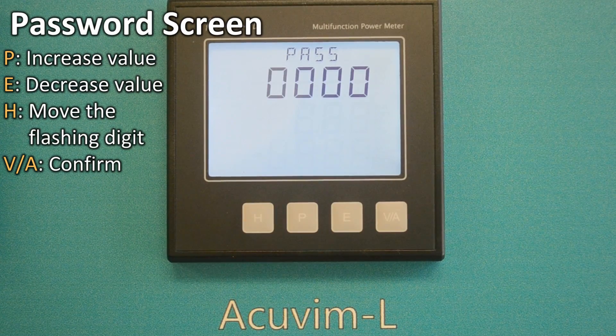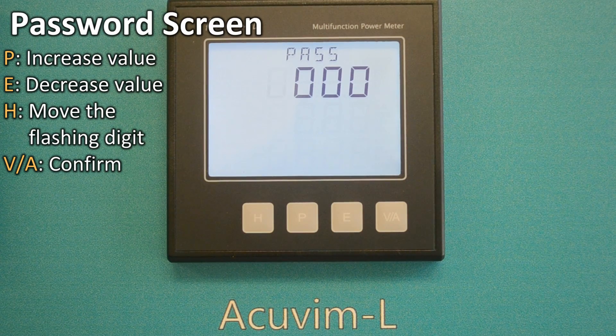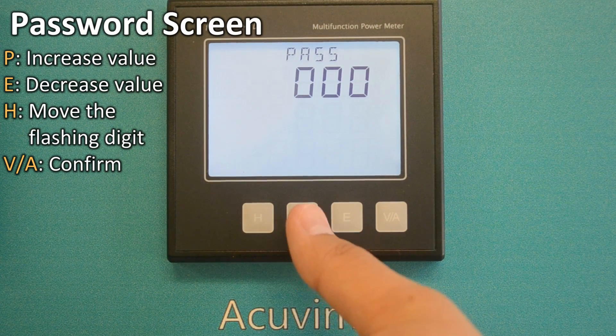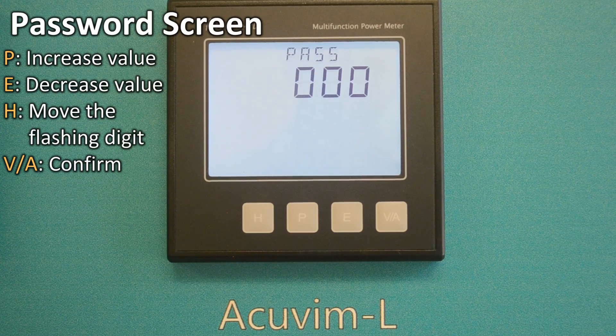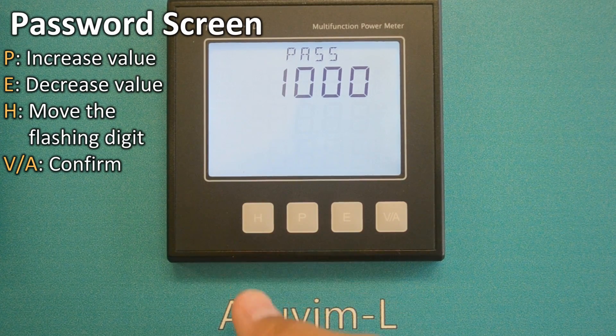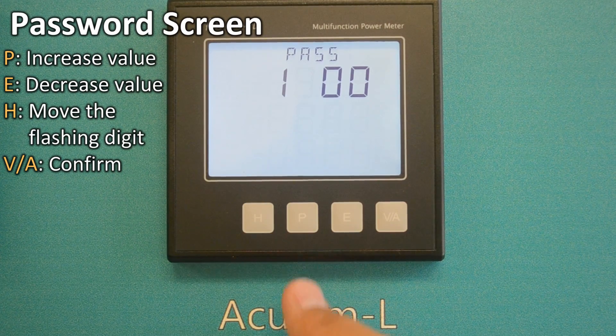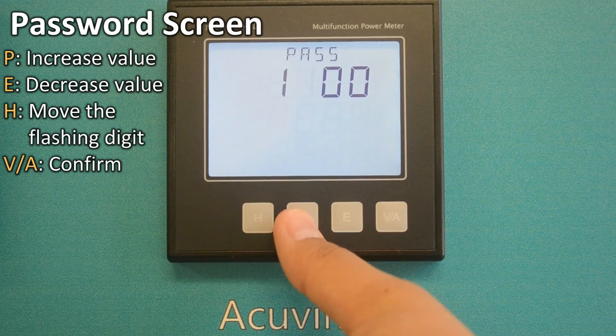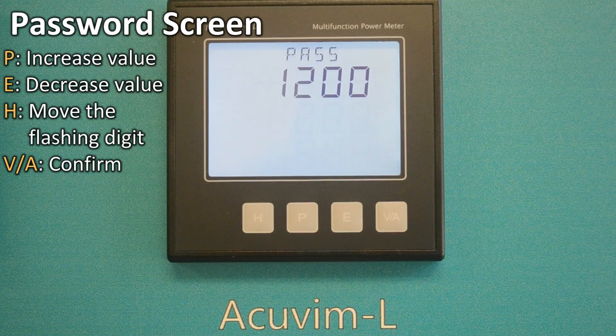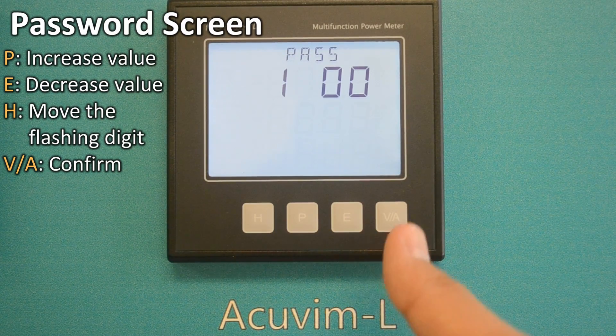For instance, if your password is 1200, press P to change the first digit to 1, press H to move to the next digit, and press P to change the value to 2. When you finish entering your password, press the VA key to confirm.